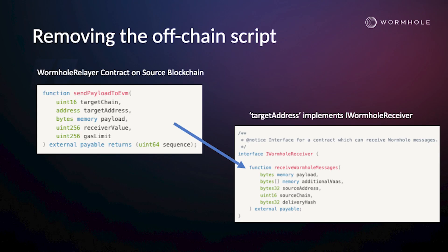Any questions? — What was the delivery hash? In receive wormhole messages, every delivery happens with — we provide you the hash of that piece of data that gets published on the source chain. It's not the transaction hash, it's the hash by Wormhole itself. And it's useful if you want to prevent duplicates from arriving.